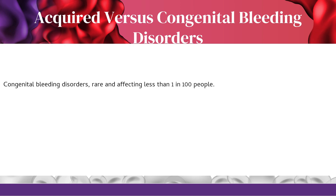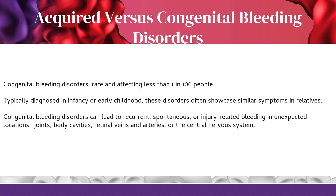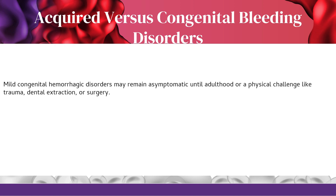Congenital bleeding disorders are rare, affecting less than 1 in 100 people. Typically diagnosed in infancy or early childhood, these disorders often showcase similar symptoms in relatives. They can lead to recurrent, spontaneous, or injury-related bleeding in unexpected locations — joints, body cavities, retinal veins and arteries, or the central nervous system. Mild congenital hemorrhagic disorders may remain asymptomatic until adulthood or a physical challenge like trauma, dental extraction, or surgery.